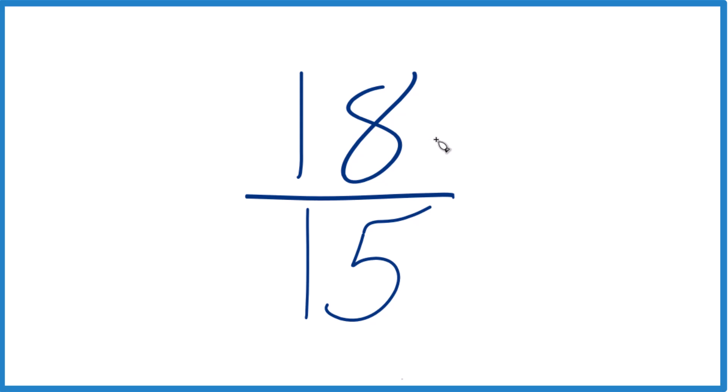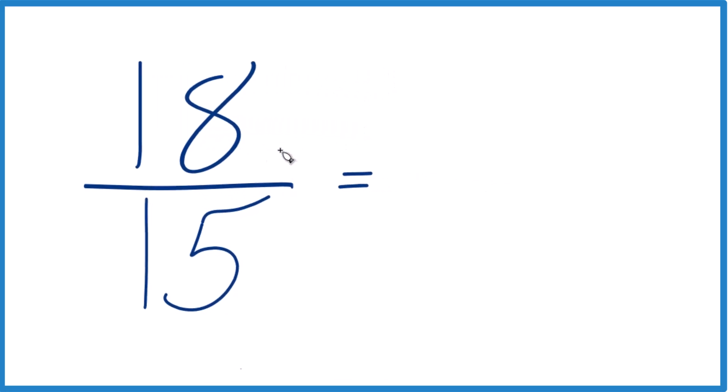And it looks like 3 times 6, that's 18, and 3 times 5 is 15. So let's divide by 3, 3 is our common factor.